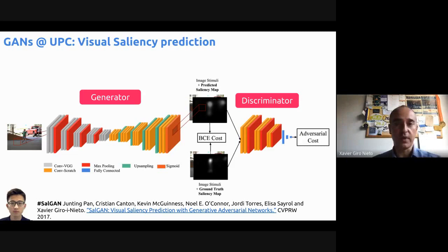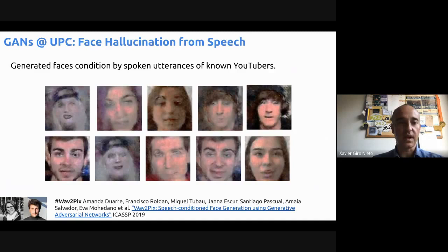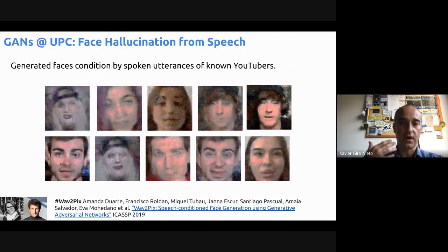Later there was a continuation by another student, Marc, who was not only predicting the map but also predicting the realistic path over the image of the eye gaze — and actually they won a couple of awards with this work. More recently, with our PhD student Amanda Duarte, master student Miguel and Francisco Roldán, they managed to generate images of YouTubers based on speech. They built a dataset of pairs of detected faces from YouTubers and utterances from their speech, and conditioned the generation of faces with extracted speech.